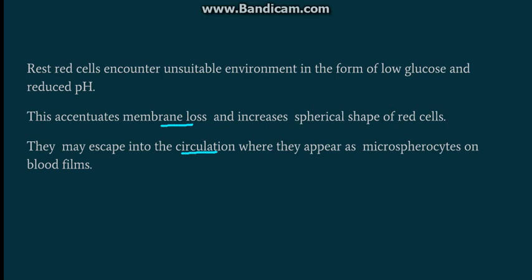When these microspherocytes enter the spleen a second time, they are again phagocytosed. This is how the hemolysis of spherocytic red blood cells continues, ultimately leading to hemolytic anemia.